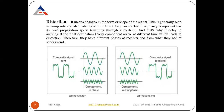The second cause is distortion, which means a change in the form or shape of the signal. Whenever the shape of the signals traveling through the medium changes, this is called distortion. This is normally seen in composite signals made up of different frequencies. A composite signal is a combination of more than one signal. Each component of a composite signal has its own propagation speed when traveling through a medium.